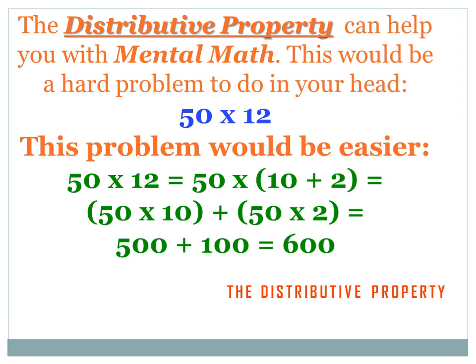Here's a trick you can use the rest of your life. Mental math is really helpful because lots of times you don't have a calculator and problems can be a little harder than you can do in your head easily. The distributive property can be used to make mental math a lot easier. Let's say we've got a problem 50 times 12. 50 times 12 is a little hard to multiply in your head. But we can rewrite that expression: 50 times 12 equals 50 times (10 plus 2). Now it's a lot easier. We've got 50 times 10, which is 500, and then 50 times 2, which is 100. So 50 times (10 plus 2) equals 500 plus 100, or 600.